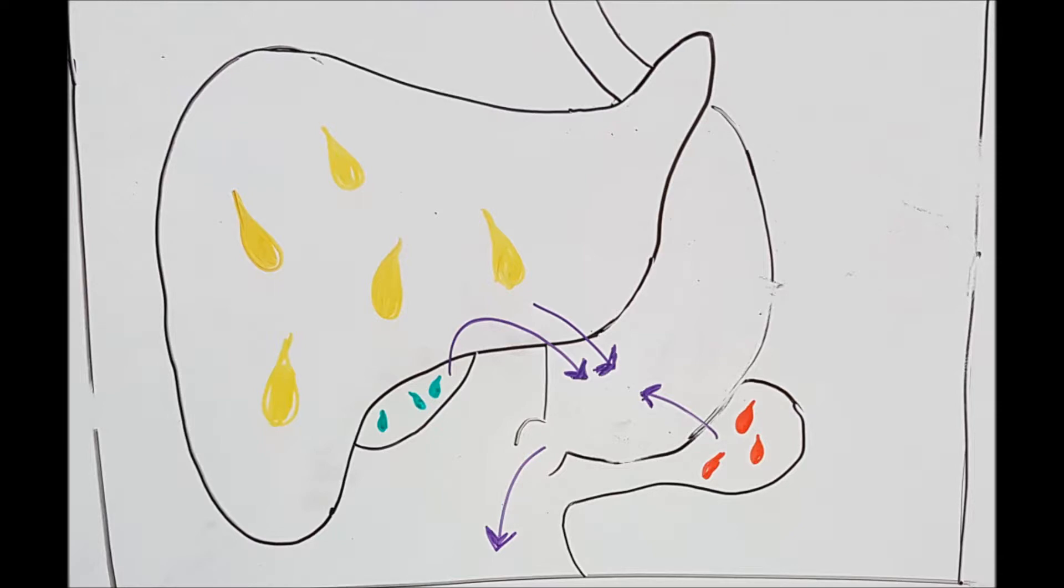After being in the stomach, the mixture moves into the small intestine. Along the way, the liquids previously created by the pancreas, the liver, and the gallbladder dissolve everything. The small intestine has little hairs called villi. Those absorb all the needed elements. Once absorbed, they are transferred into the blood to feed the body's organs.